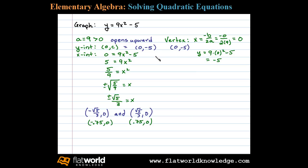We can begin to sketch the graph. So far we have three points. The y-intercept which also happens to be the vertex at 0 comma negative 5, and that's right here. And the two x-intercepts. We have an x-intercept at about negative 0.75 comma 0 and 0.75 comma 0.